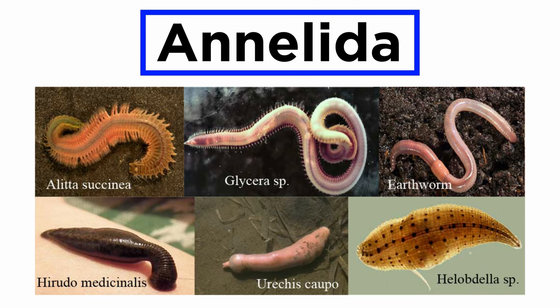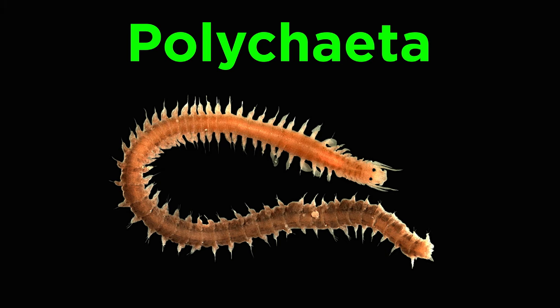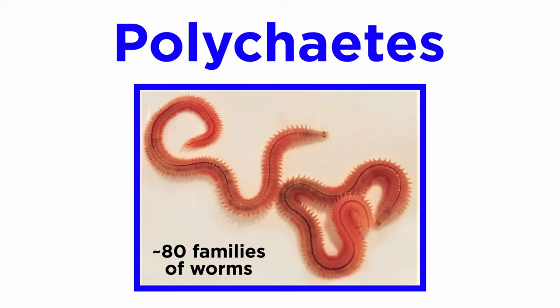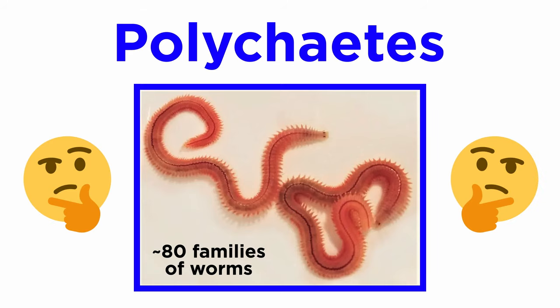With the general characteristics of annelids understood, let's get into some more detail, starting with the class Polychaeta. The term polychaeta, or polychaete, is used to refer to any of 80 or so morphologically distinct families of worms. Though many of these groups were once thought to be closely related, more recent analyses have revealed this is not the case. Thus, the term is merely descriptive — it no longer refers to specific evolutionary history.